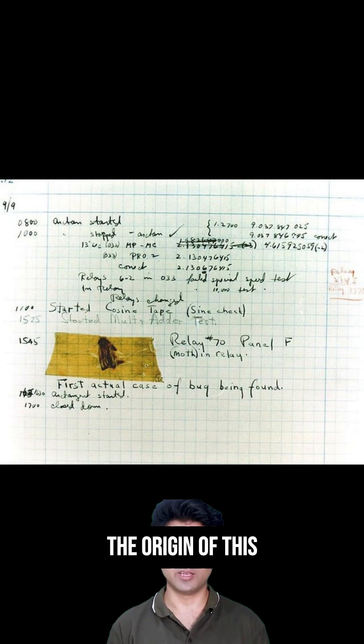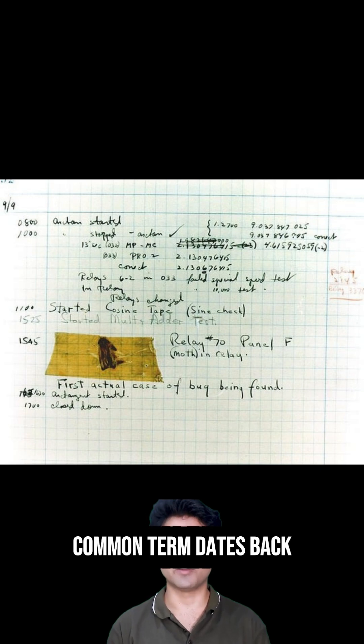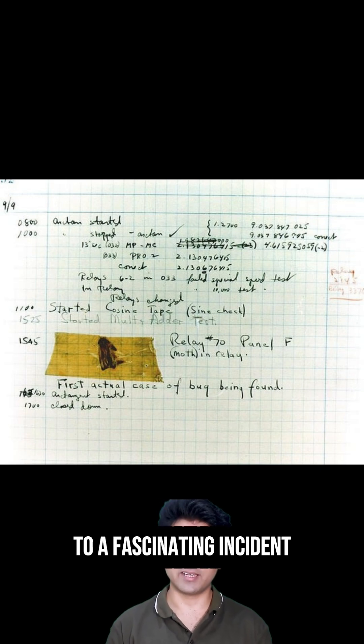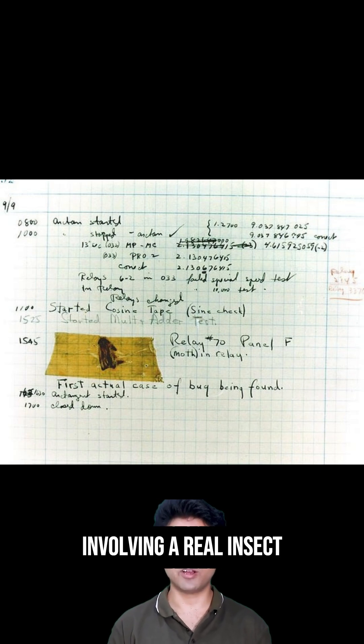Why is the software error universally known as a bug? The origin of this common term dates back to a fascinating incident involving a real insect and a pioneering computer. In 1947, at Harvard University, computer pioneer Grace Hopper and her team were working on the Mark II Aiken relay calculator.